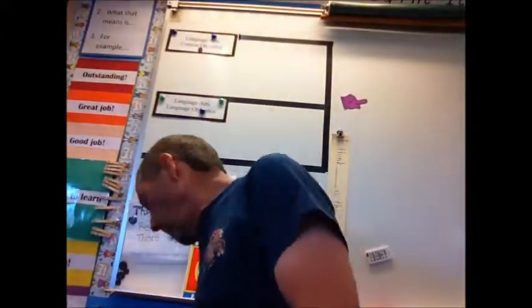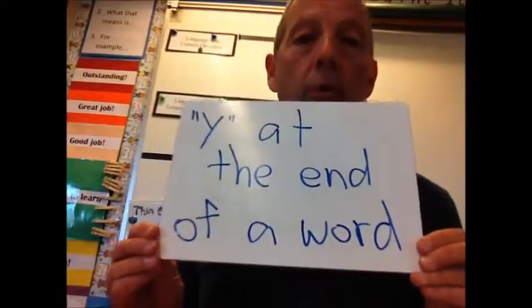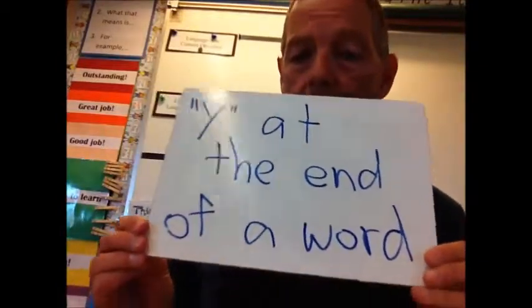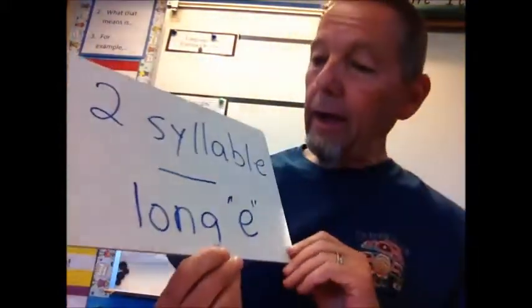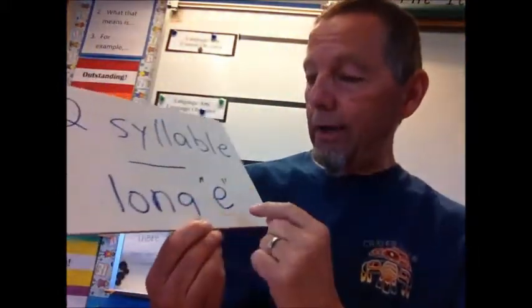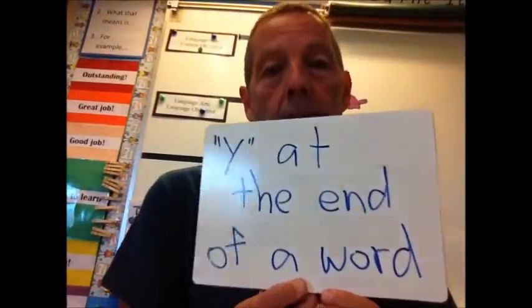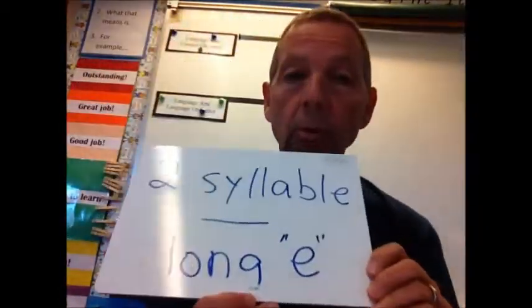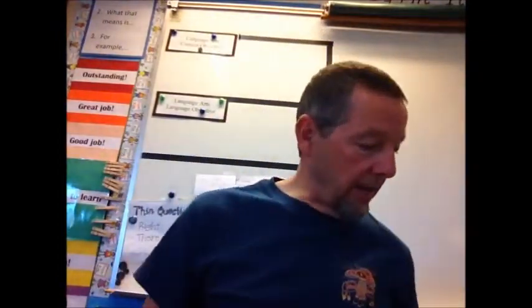and this is a video on Y at the end of a word. Y at the end of the word. It's gotta be a two-syllable word, and that Y makes the long E sound. One more time. Y at the end of a word of a two-syllable word, and that Y makes the long E sound. Let me give you an example.